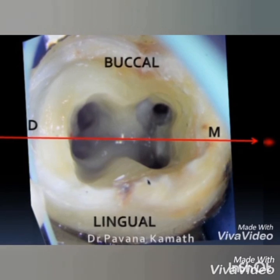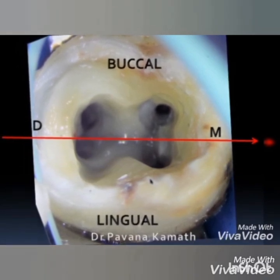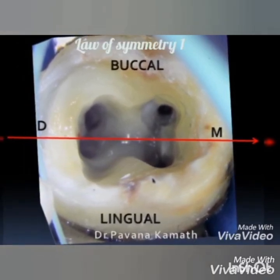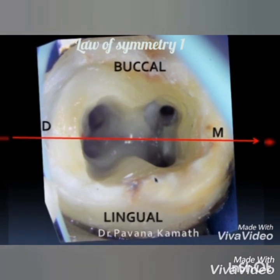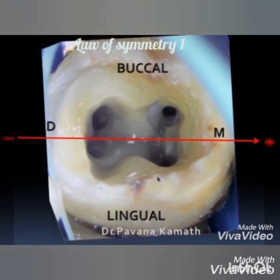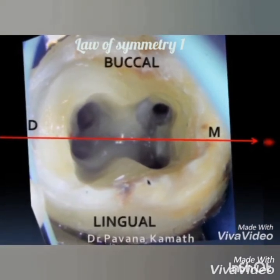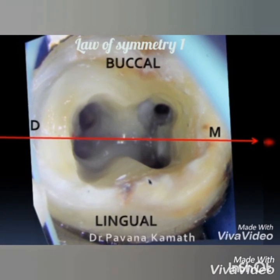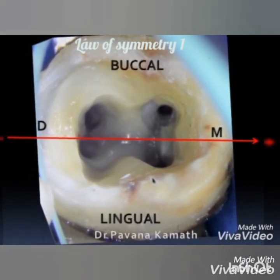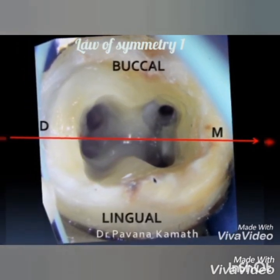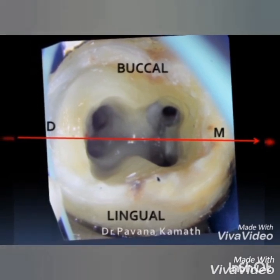The first law is the law of symmetry 1. It says that in the pulp chamber, if you were to draw a line in the center of the tooth at the level of the CEJ mesiodistally, the canals in all teeth except maxillary molars will be equidistant from the mesiodistal line.